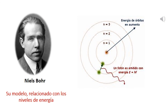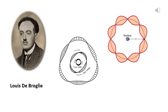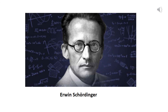Niels Bohr postuló que el movimiento del electrón estaba restringido a un número discreto de órbitas circulares, relacionadas con niveles de energía. Louis de Broglie propuso que un haz de electrones en movimiento, al poseer una masa muy pequeña, podría tener una naturaleza ondulatoria y comportarse como un haz de luz, adquiriendo una dualidad: el electrón se podría comportar como partícula o como onda. Erwin Schrödinger propuso una ecuación matemática tomando al electrón como una onda, donde se puede determinar la probabilidad de encontrar la posición y energía del electrón alrededor del núcleo.